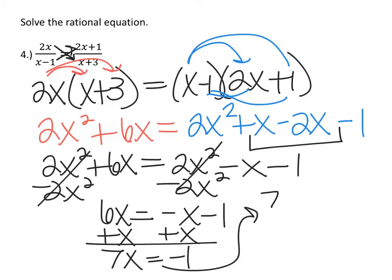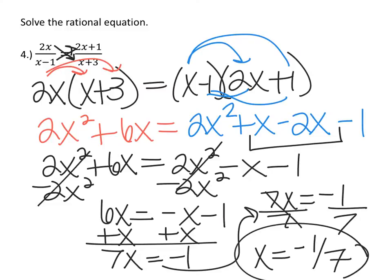To continue solving this, I'll divide both sides by 7. So x equals negative 1 over 7 is my final answer.